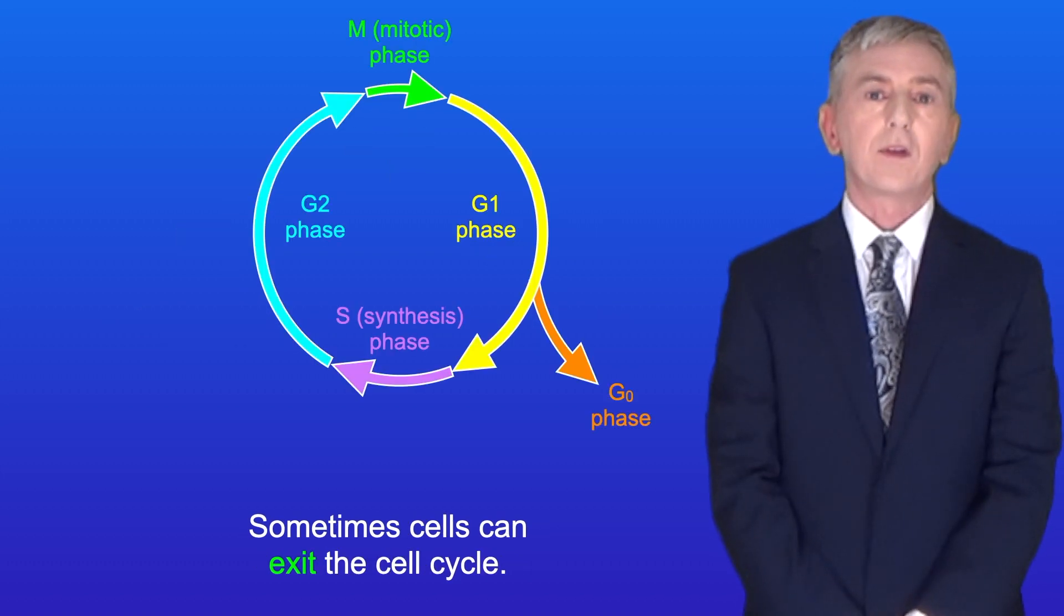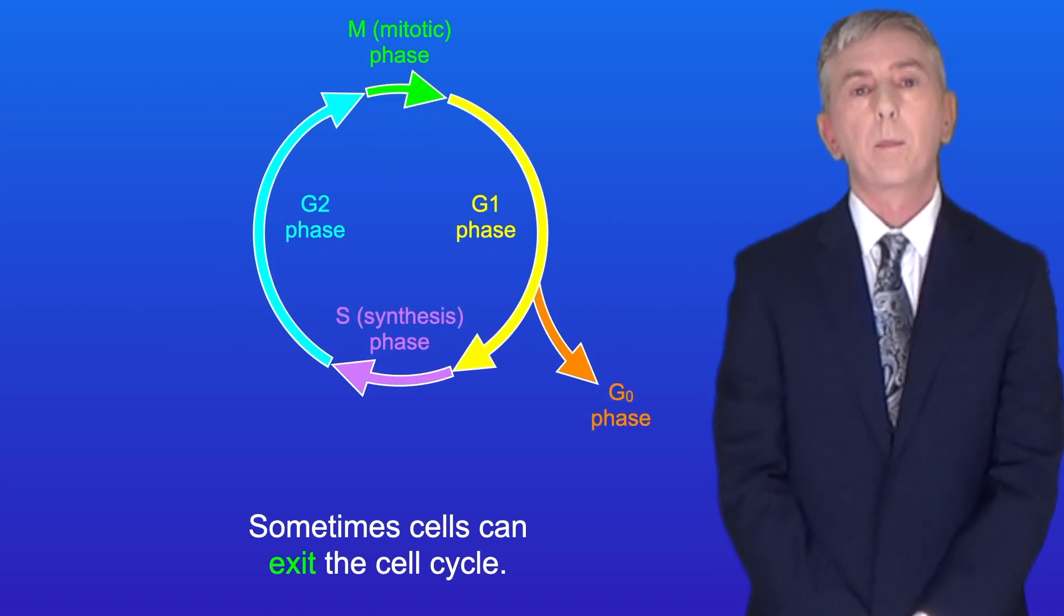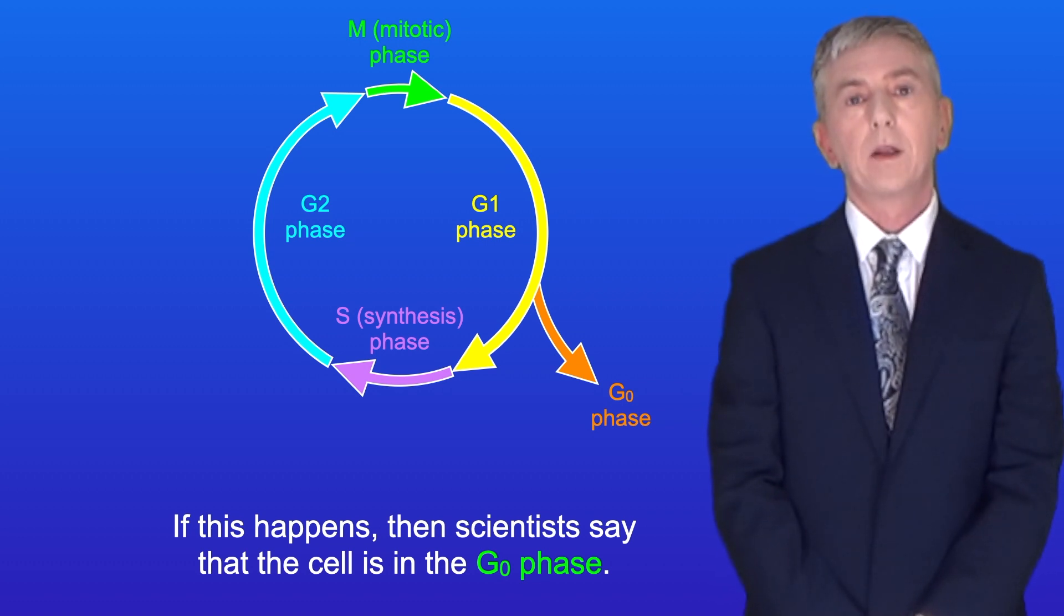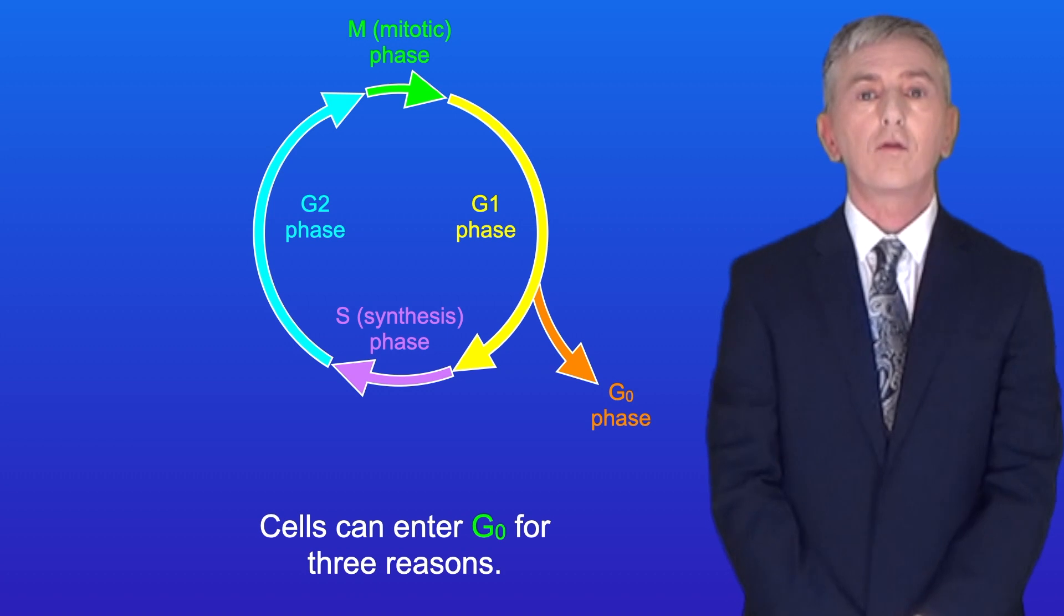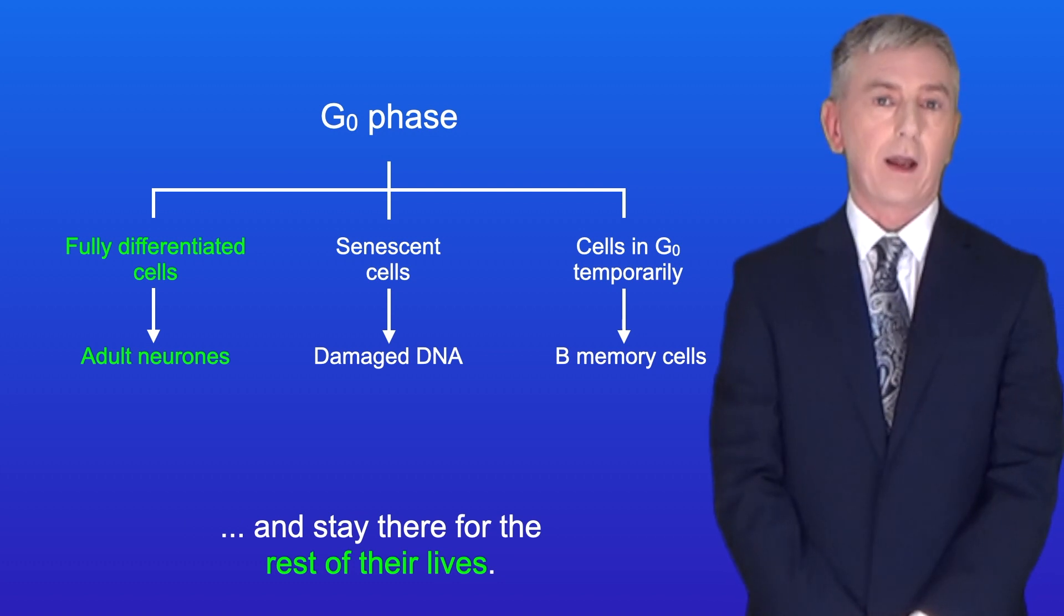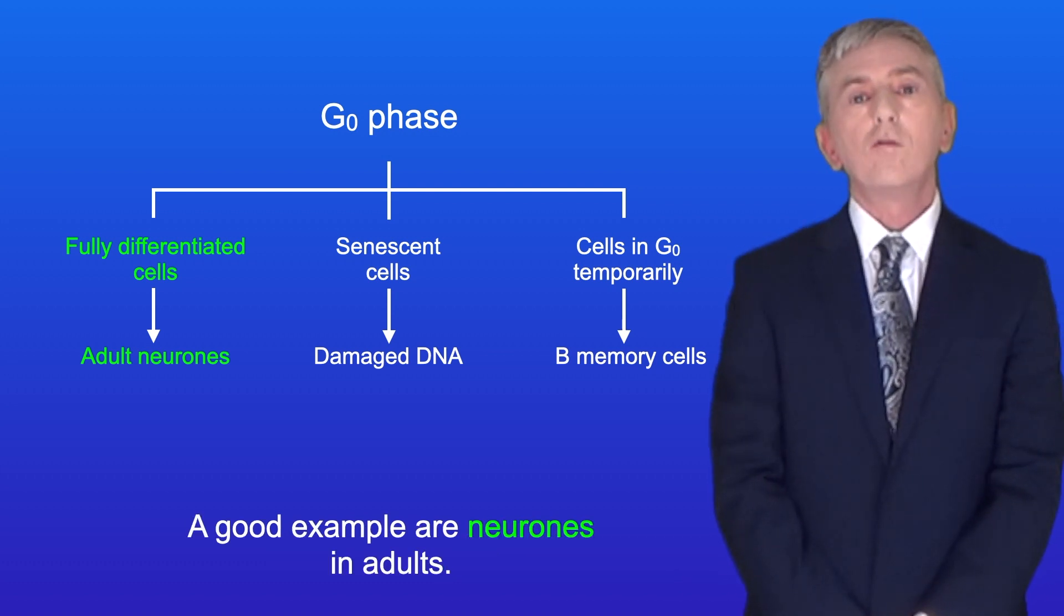Sometimes cells can exit the cell cycle. If this happens then scientists say that the cell is in the G0 phase. Cells can enter G0 for three reasons. Firstly, fully differentiated cells enter G0 and stay there for the rest of their lives. A good example are neurons in adults.